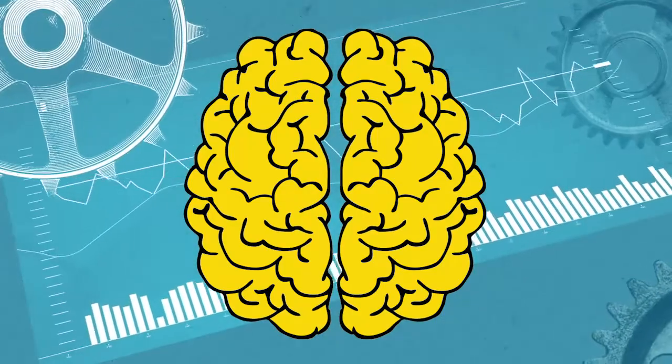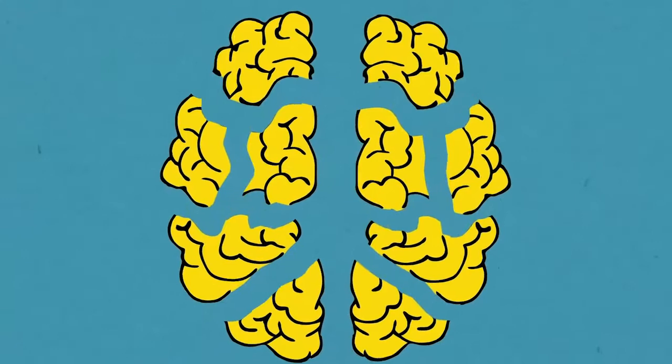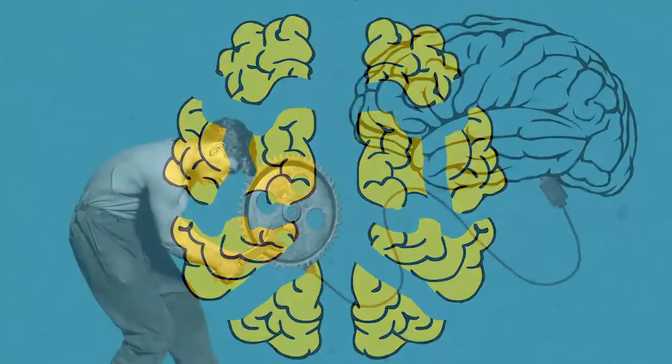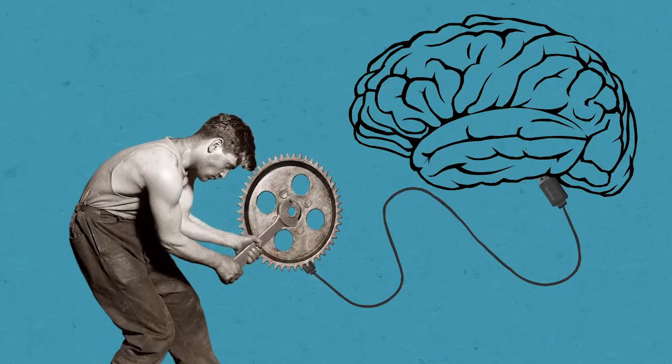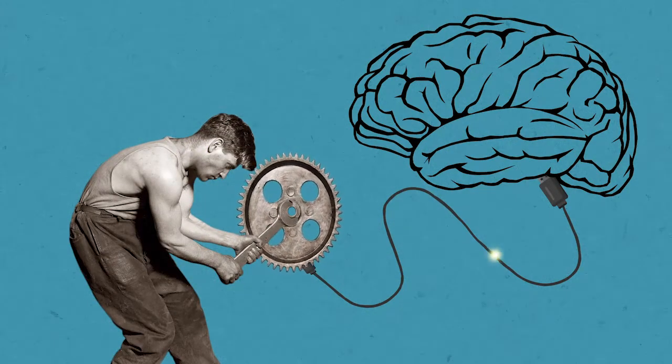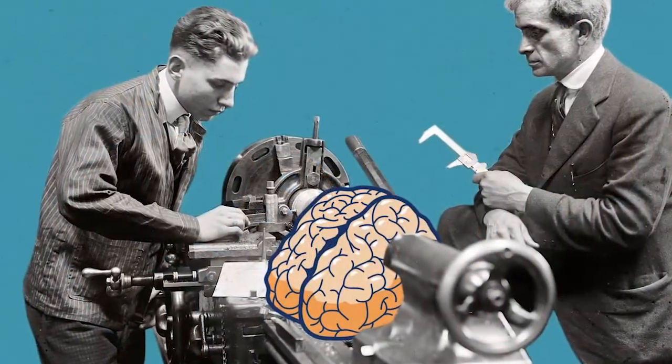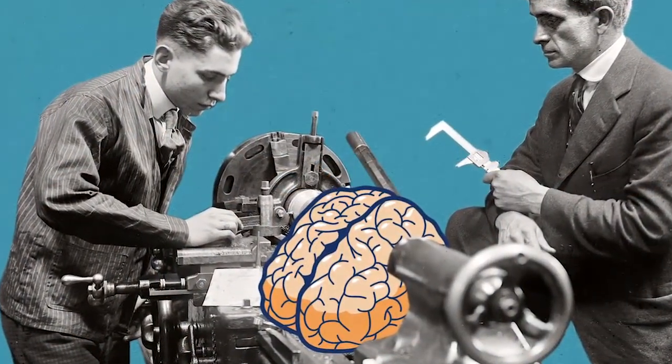It is true that each hemisphere processes information differently, but no one area of your brain is specifically responsible for creativity. Neuroscience considers that creative thinking is the result of large neural networks that are interconnected throughout the brain. Research suggests that three brain networks are involved in the creative process.